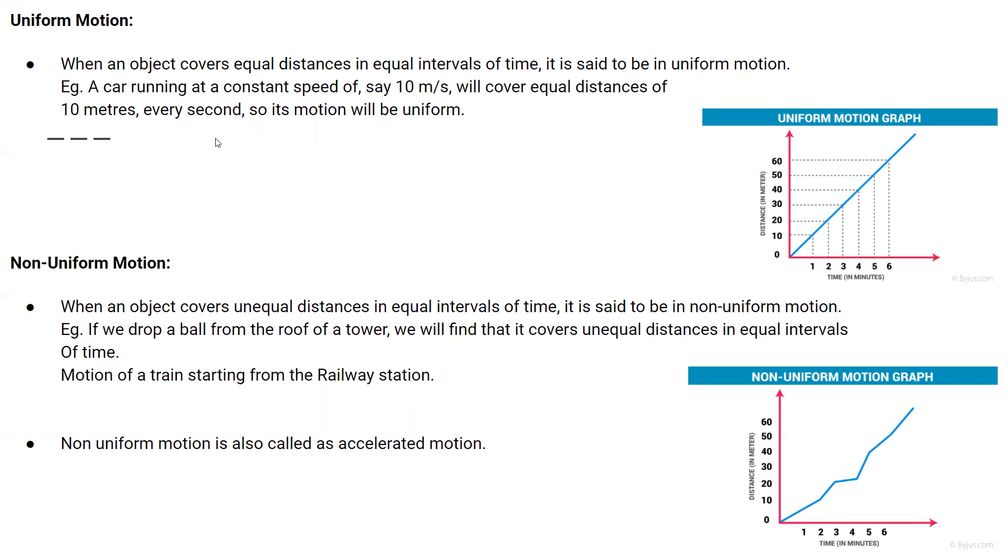The graph for uniform motion is always a straight line from the origin. While in case of non-uniform motion, the graph is always a curved motion.